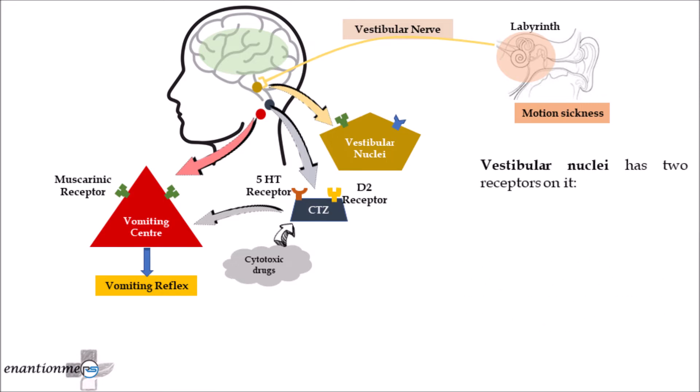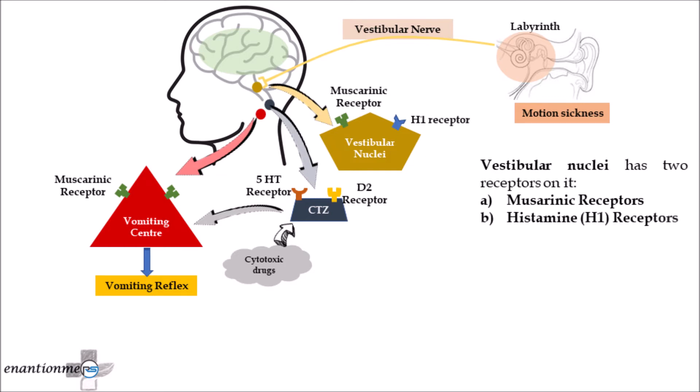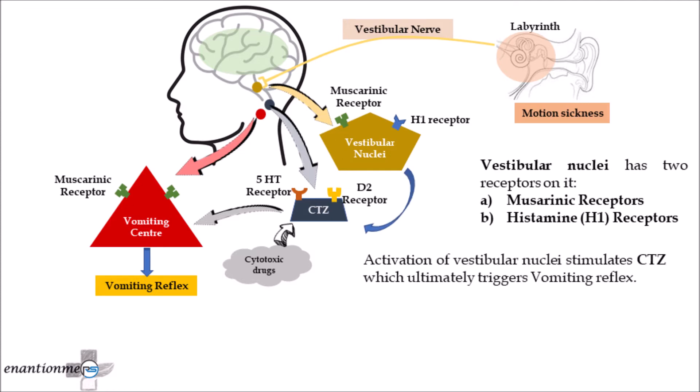Vestibular nuclei has two receptors on it: first, muscarinic type receptors; and second, histamine H1 type receptors. Activation of vestibular nuclei stimulates CTZ, which ultimately triggers the vomiting reflex.